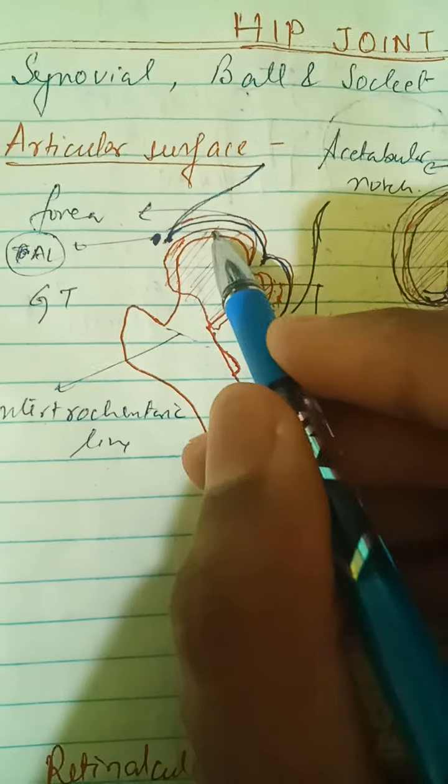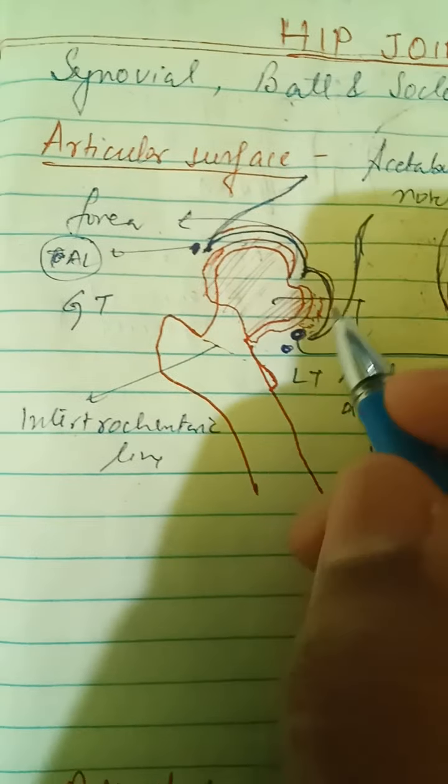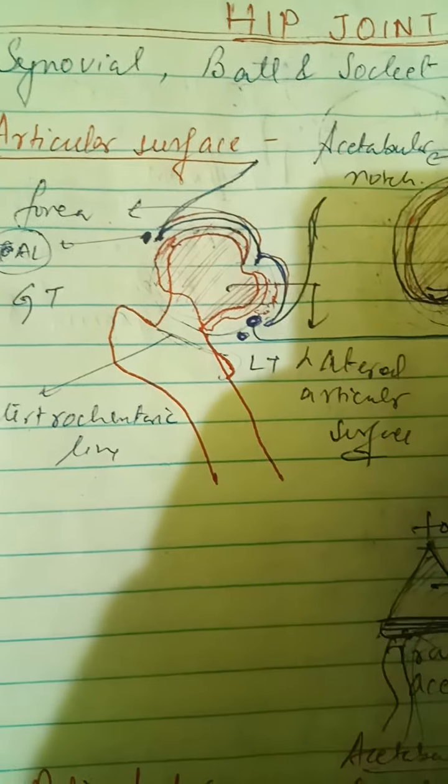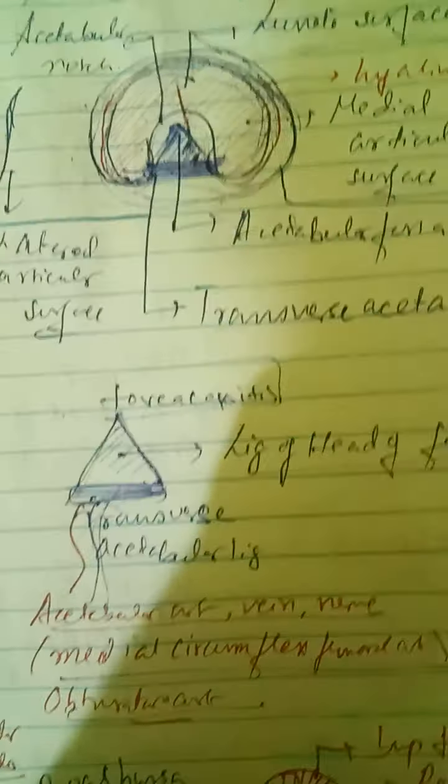The lateral articular surface is formed by the head of the femur. There is the greater trochanter, the lesser trochanter, the intertrochanteric line, and the fovea capitis. This surface is again covered by hyaline cartilage, and the capsular ligament is also attached here along the intertrochanteric line.